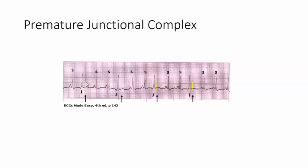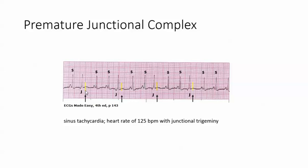So this is a premature junctional complex. The way that we're going to report this is sinus tachycardia with a heart rate of 125 beats per minute with junctional trigeminy. Trigeminy is when this premature complex happens every third beat, and that's exactly what's going on. You have two sinus beats, a junctional, two sinus, junctional, two sinus, junctional. So this is trigeminy.